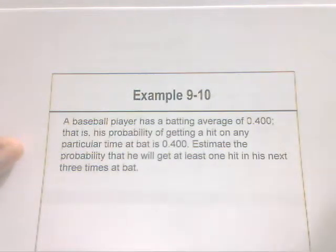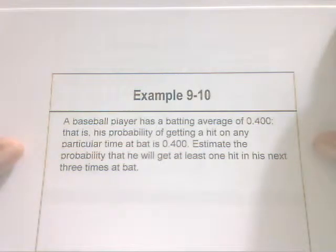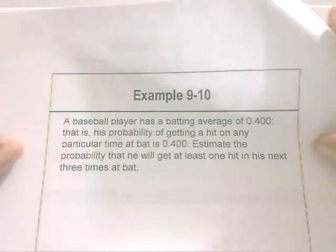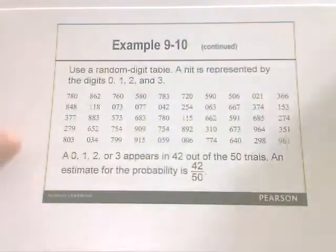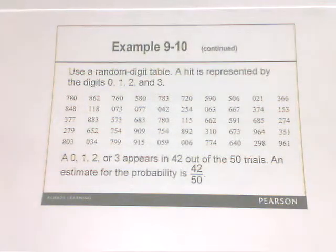Estimate the probability that he will get at least one hit in his next three times at bat. So here we can use a random digit table to figure this out.